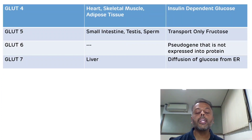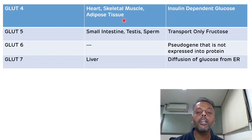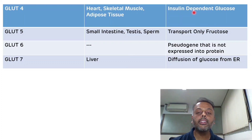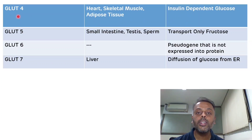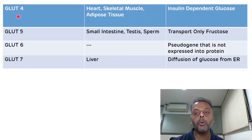The fourth glucose transporter, GLUT4, is present in the heart, skeletal muscle, and adipose tissue, and glucose transport via GLUT4 is insulin dependent. That is why in diabetes mellitus, where there is insulin deficiency, skeletal muscle and adipose tissue are affected. Other insulin-dependent or insulin-responsive glucose transporters include GLUT8, present in the blastocyst, and GLUT12, present in the mammary gland, prostate, and white adipose tissue.